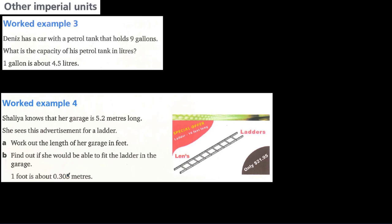Now for other imperial units: Dennis has a petrol tank that holds 9 gallons. We need to find the capacity in liters. Given that 1 gallon is about 4.5 liters, 9 gallons means we multiply 4.5 by 9. So 4.5 times 9 equals 40.5 liters.